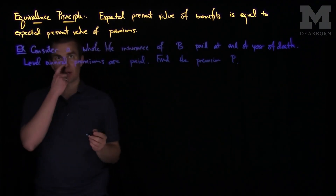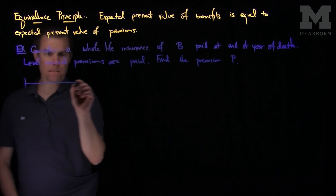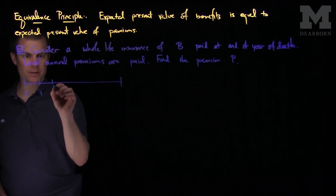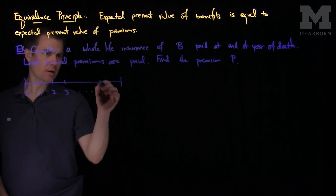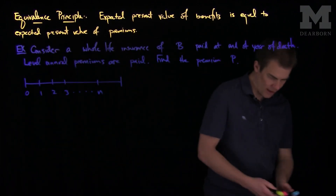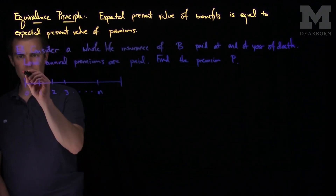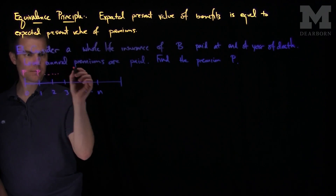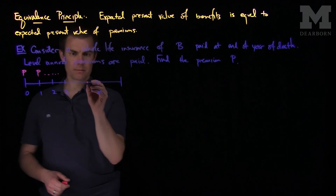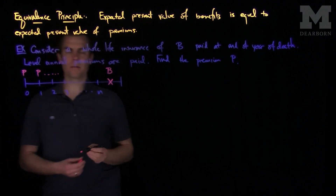We'll use the equivalence principle. We have a timeline here: time zero, time one, time two, time three, and so on up to time n. Starting at the inception of this policy, you'll pay a premium P as long as you are alive. And then at the time of death, you'll receive a benefit of B.